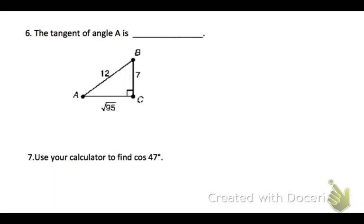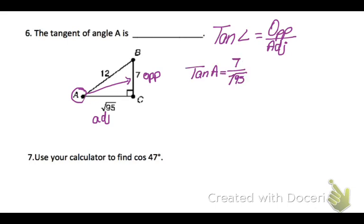So, the tangent of angle A is, well, remember that tangent of an angle is the length of the opposite side over the adjacent side. So, looking at angle A, my opposite is 7 and my adjacent is square root of 95. So, I'm going to put those into a ratio. So, tangent of A is 7 over square root of 95. But you should remember that we can't have square root of 95 in the denominator.